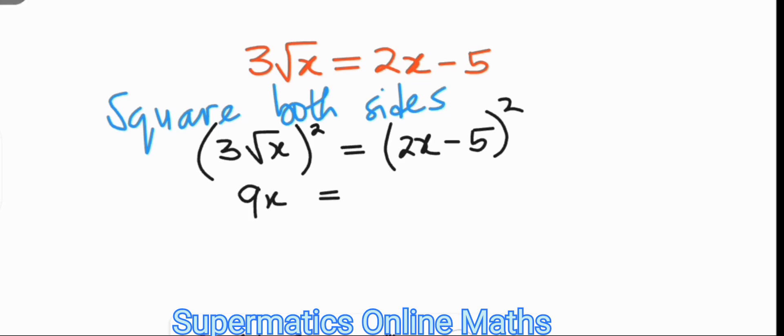Then expanding what we have on the right hand side, we have 4x squared minus 20x plus 25.